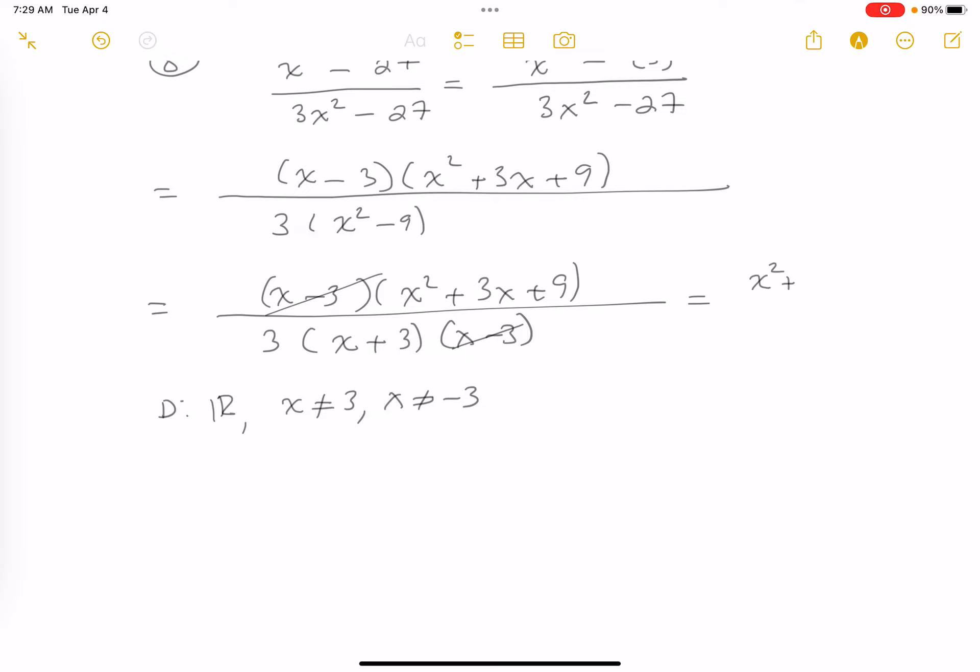What are you left with? x squared plus 3x plus 9. On bottom, we're left with 3 times x plus 3.